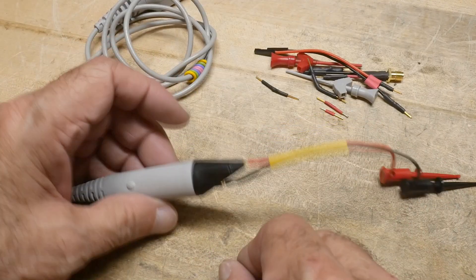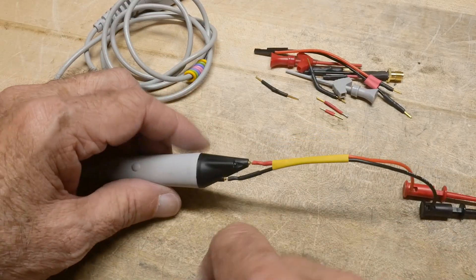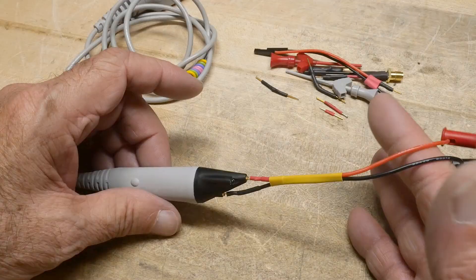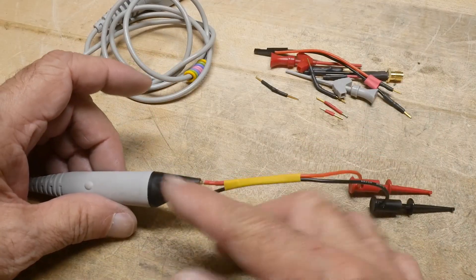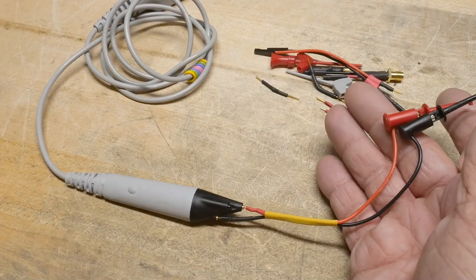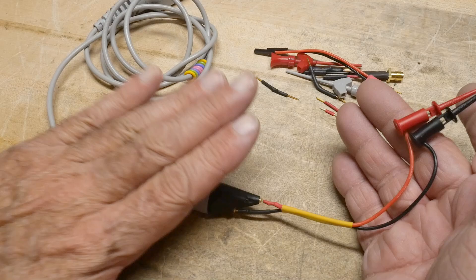If you take a look at the probes that come with this, they look just like this. We have a ground lead and a signal lead. This will ruin the bandwidth of the probe because you're adding some inductance and stuff to it, but it will still be a low load on your circuit.